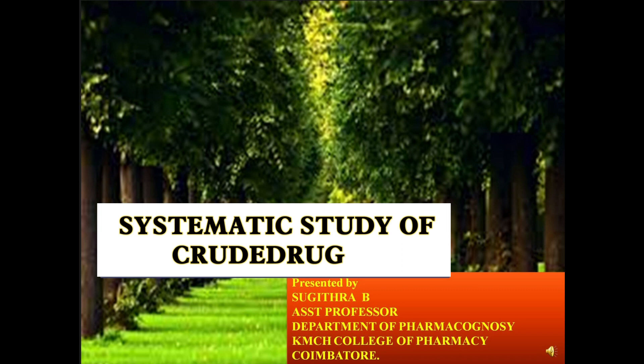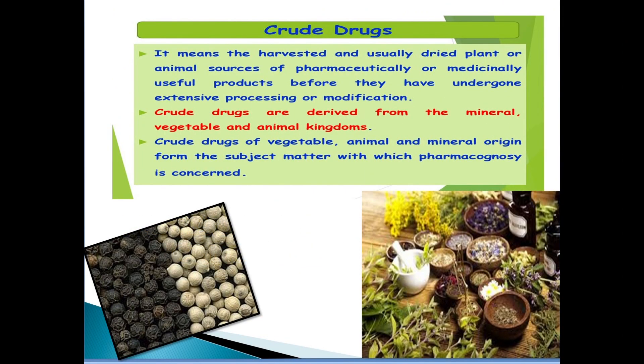We are talking about the systematic study of crude drug. What is crude drug? Crude drug is nothing but it means the harvested and usually dried plant or animal source of pharmaceutical or medicinally useful product before they have undergone extensive processing or modification. Crude drugs are derived from various sources like plant source, mineral source and animal source.